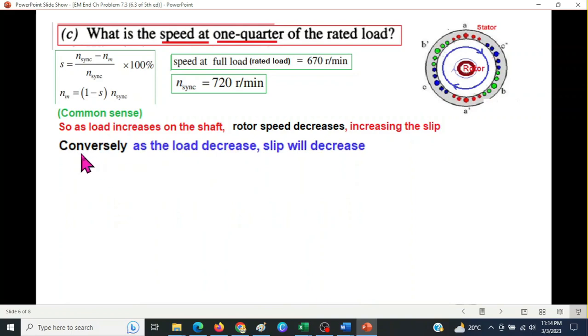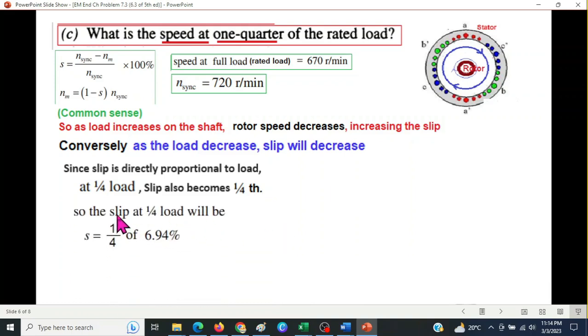Conversely we can say that as the load decreases, the slip will also decrease. We will use this in our case because here the load is decreasing. So since the slip is directly proportioned to the load, at one fourth load the slip will also become one fourth. That means the new slip will be one fourth of the calculated slip earlier at full load. And this will be equal to 0.0171.